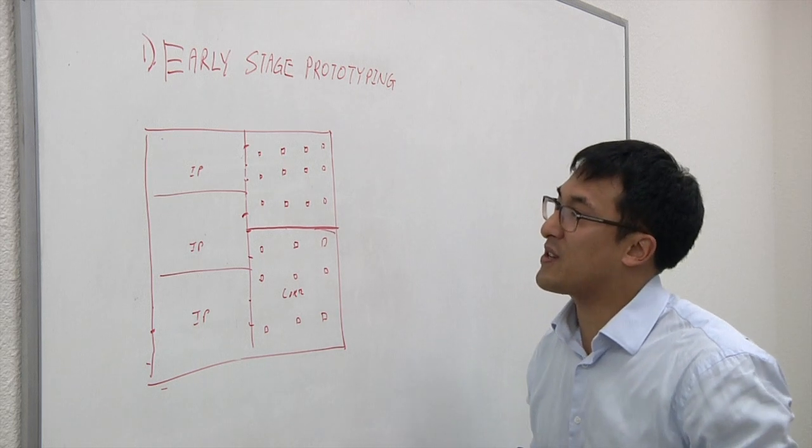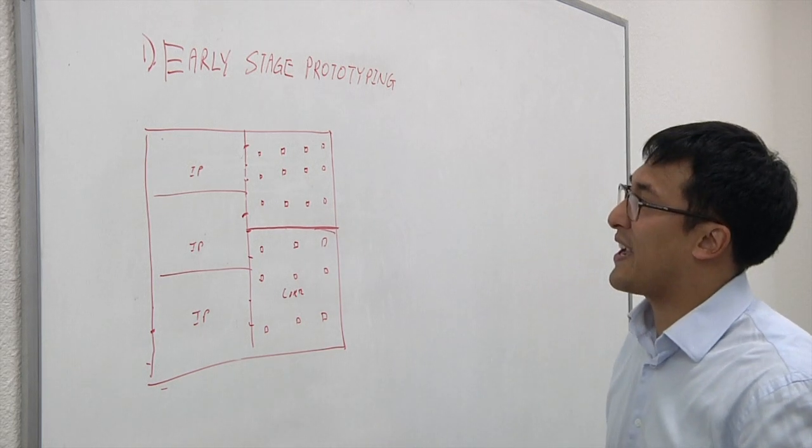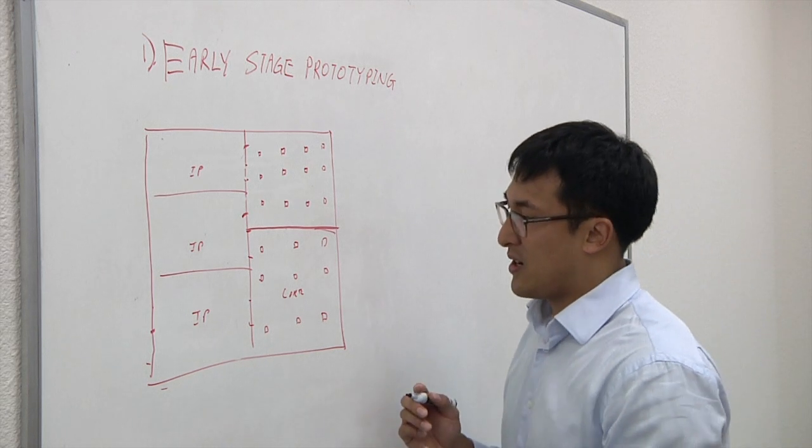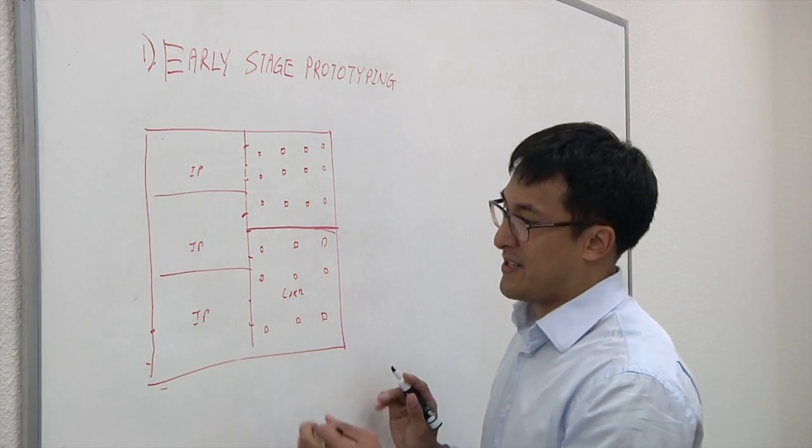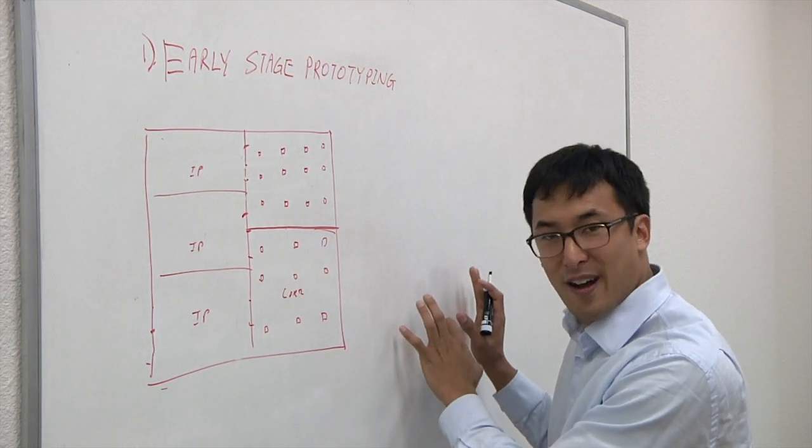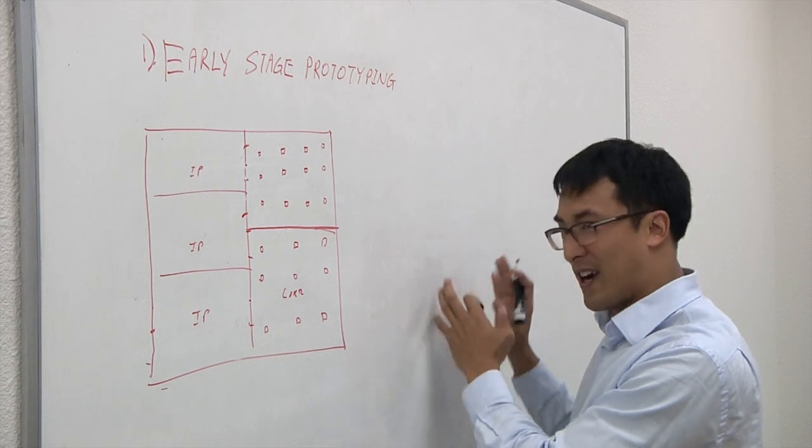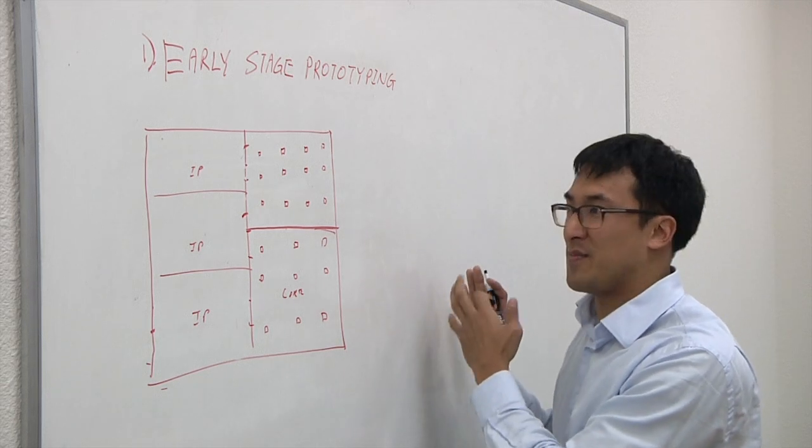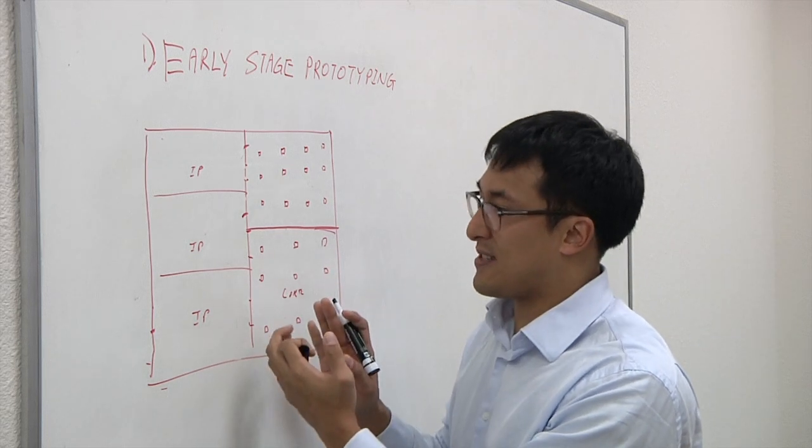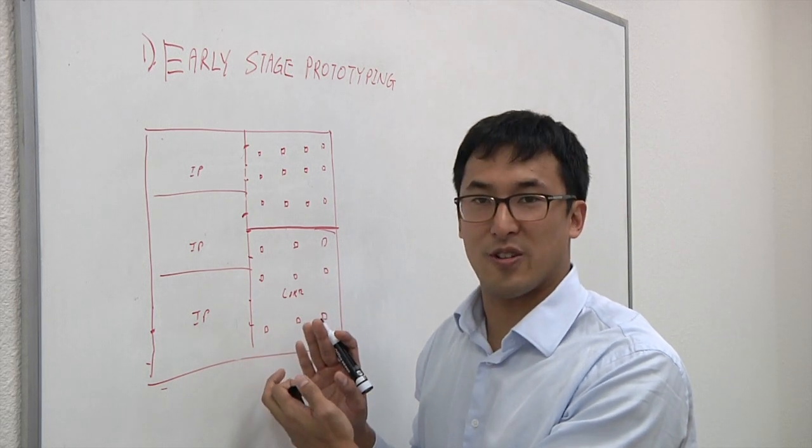The benefit is you can actually understand what kinds of weaknesses or how robust your power grid is much earlier rather than later on when your design is fully routed and you realize, oh, I have an IR drop problem. What can I do to mitigate this? Because you can understand these kinds of issues at a much earlier stage.